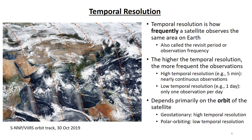Temporal resolution depends primarily on the orbit of the satellite. Geostationary satellites have high temporal resolution, while polar orbiting satellites have relatively low temporal resolution.